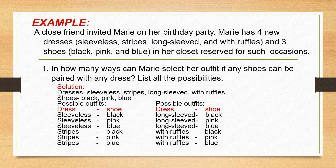Example: a close friend invited Marie to her birthday party. Marie has four new dresses — sleeveless, stripes, long sleeve, and with ruffles — and three shoes which are black, pink, and blue in her closet reserved for such occasions. The question is: in how many ways can Marie select her outfit if any shoes can be paired with any dress?